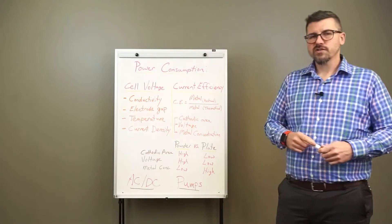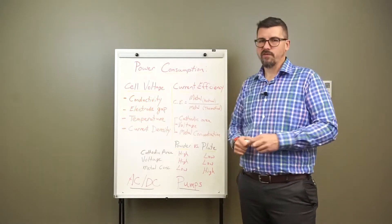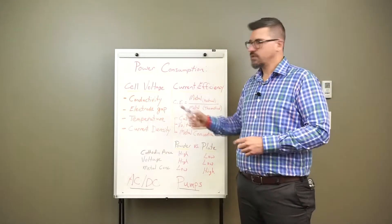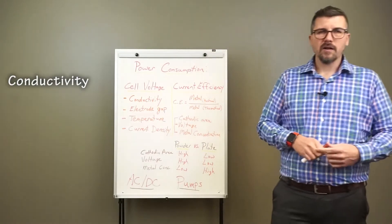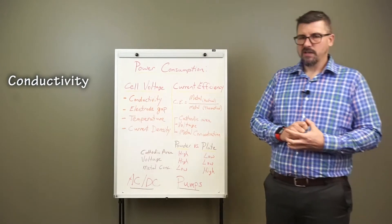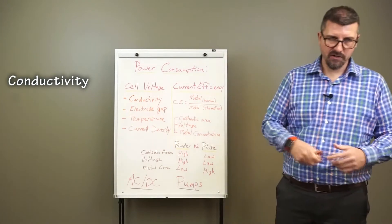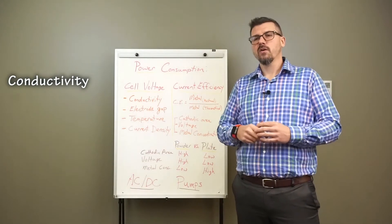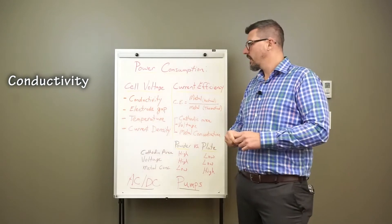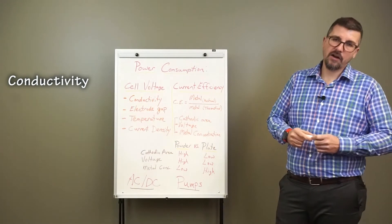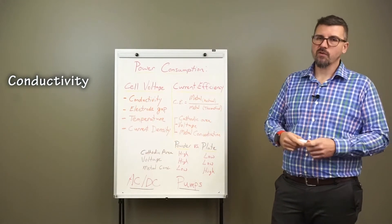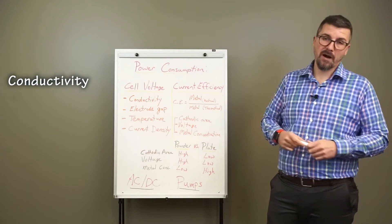Let's take a look at cell voltage in a bit more detail. The cell voltage really depends on four different factors. The first is conductivity. A low conductivity solution will generally result in a high cell voltage and higher power consumption. A low pH or a high acidity solution is a higher conductivity, lower cell voltage, and better for power consumption.